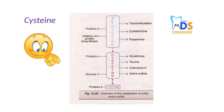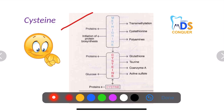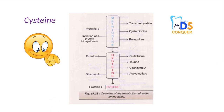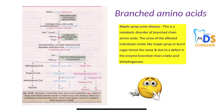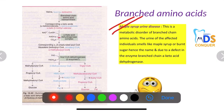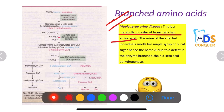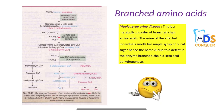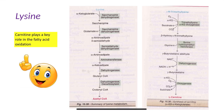Next, cysteine: the sulphur-containing amino acid. This is the overall view of its metabolism. Next, branched-chain amino acids — maple syrup urine disease is a metabolic disorder of branched-chain amino acids, where the urine smells like maple syrup or burnt sugar, hence the name. It is due to a defect in the enzyme branched-chain alpha-keto acid dehydrogenase.